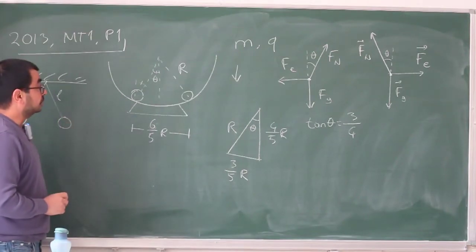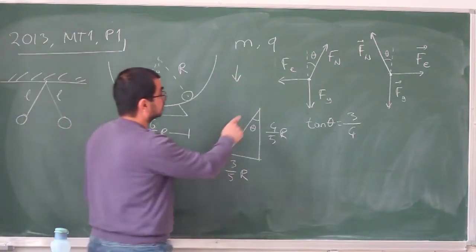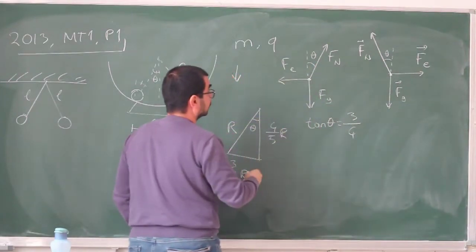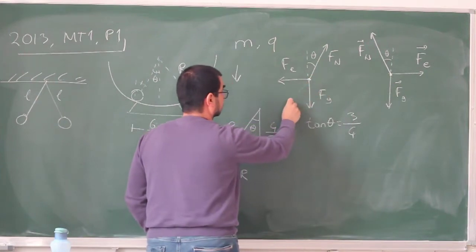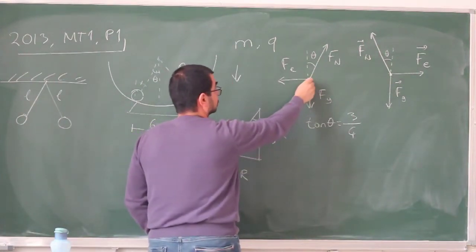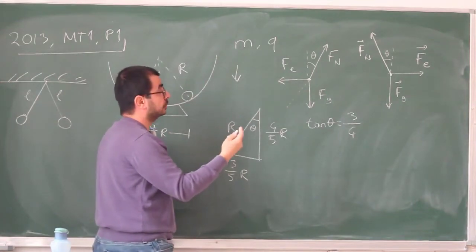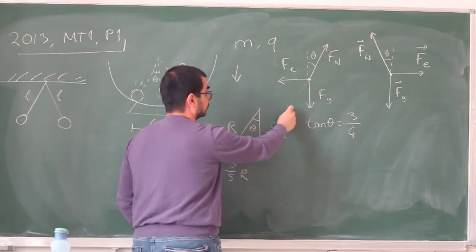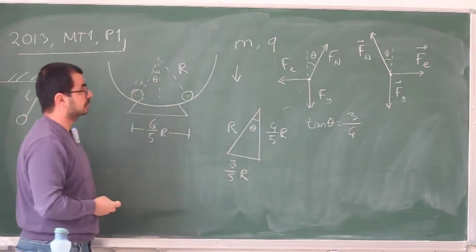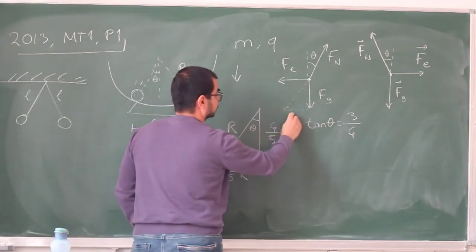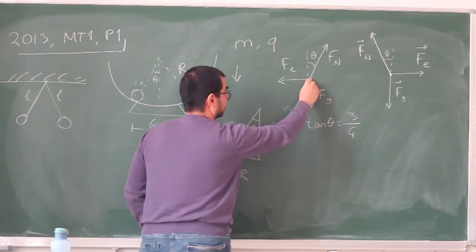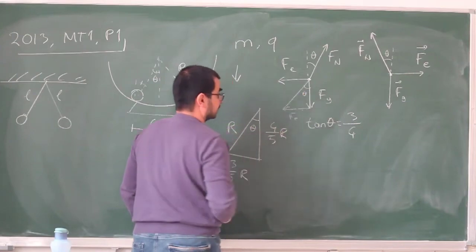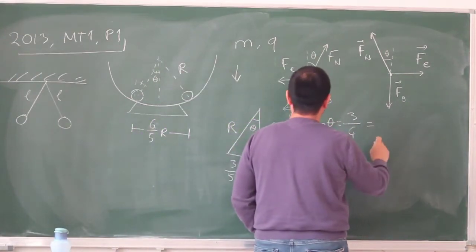And this free-body diagram is very helpful, because let's just extend this over here. So this normal force, because in equilibrium it's just cancelling these two, it's going to be the vector sum of these two. The opposite of the normal force is going to be the vector sum of these two. So I can actually carry out the electric force this way. So I can have a triangle here with the angle theta.